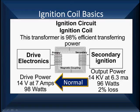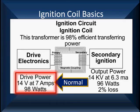The ignition coil is a transformer — a step-up transformer. It has a power rating and transfers power from the primary over to the secondary using magnetic coupling. It's 98% efficient, which means we have a 2% loss. Let's start by looking at the drive power. Drive power coming in is 14 volts at 7 amps. Power is voltage times amps, so that gives us 98 watts.